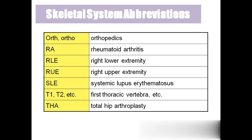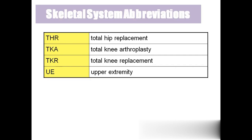RLE — right lower extremity; RUE — right upper extremity; SLE — systemic lupus erythematosus; T1, T2, T3, T4 — first, second, third, fourth thoracic vertebra; THA — total hip arthroplasty; THR — total hip replacement; TKA — total knee arthroplasty; TKR — total knee replacement — TKA and TKR are both the same; UE — upper extremity.